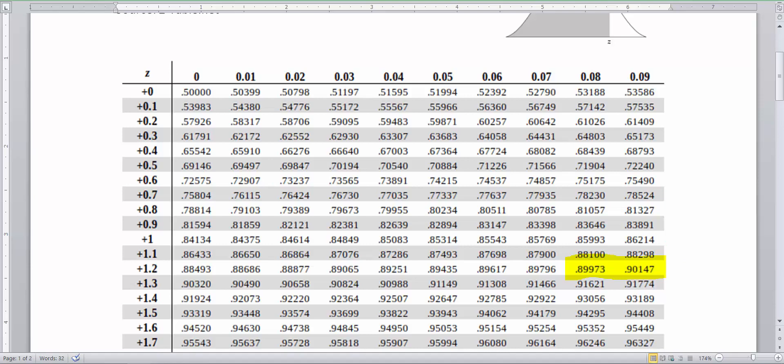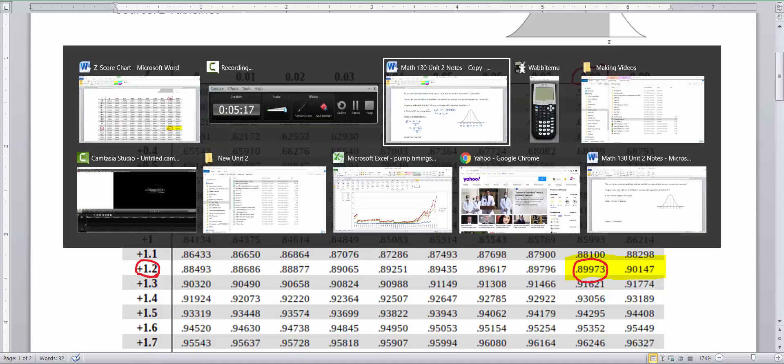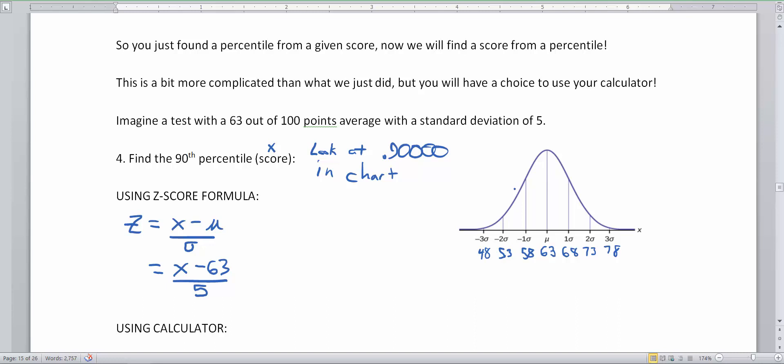Well, the one that's closer is going to be this one. So my z-score is going to be 1.2 plus the 0.08 or my z-score for this percentile is 1.28. So going back to our problem here, my z-score taken from the z-chart was 1.28.